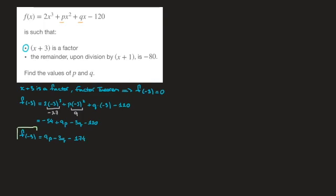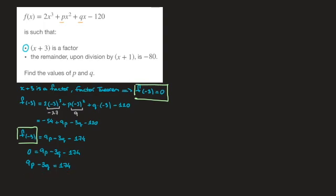Gathering like terms, f of negative 3 equals 9p minus 3q minus 174. Using the fact that f of negative 3 has to be equal to 0, this turns into 9p minus 3q equals 174. Since 9, negative 3, and 174 are all multiples of 3, dividing throughout by 3 gives us 3p minus q equals 58. That's our first equation, e1.